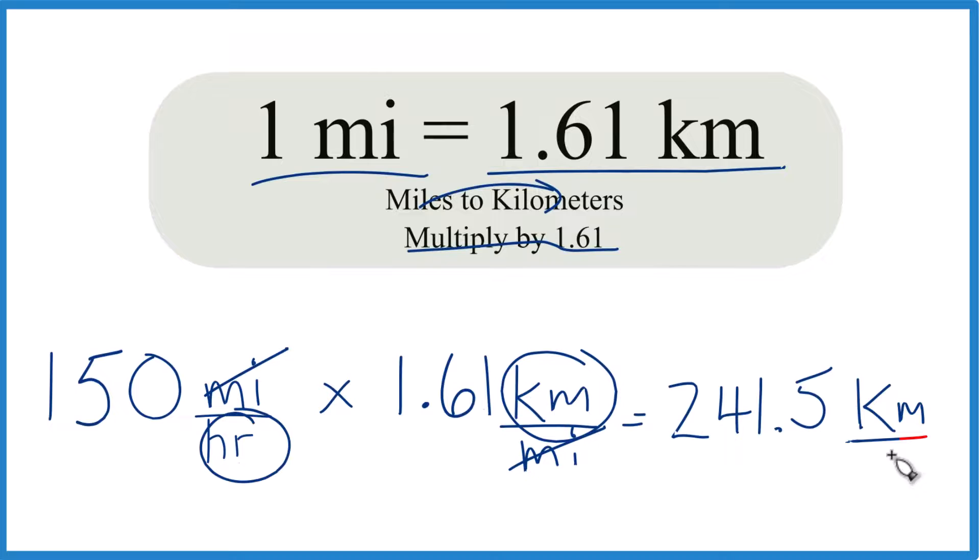So in answer to our question here, 150 miles per hour, 150 MPH is 241.5 kilometers per hour. It's Dr. B, and thanks for watching.